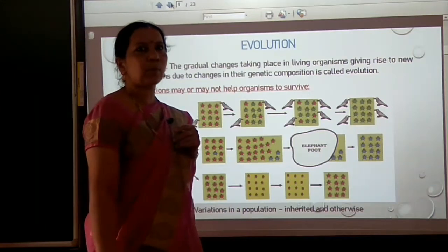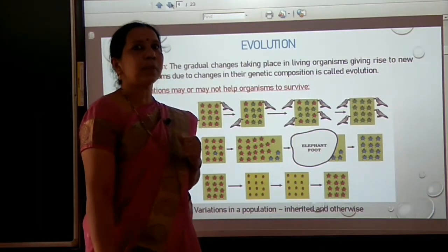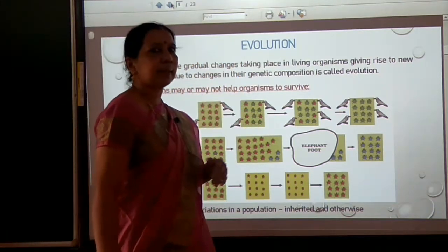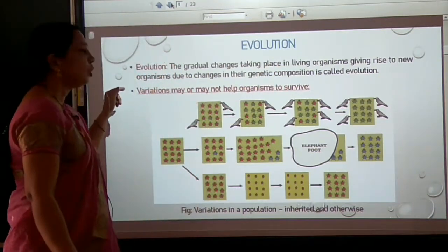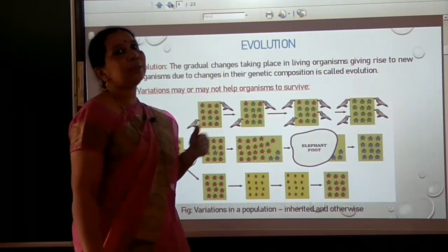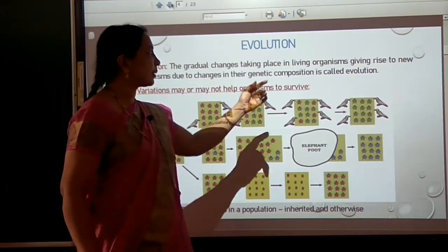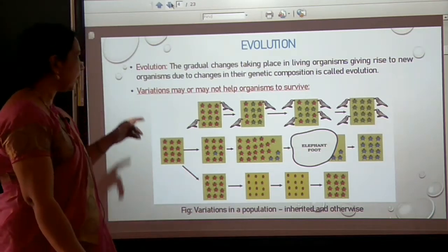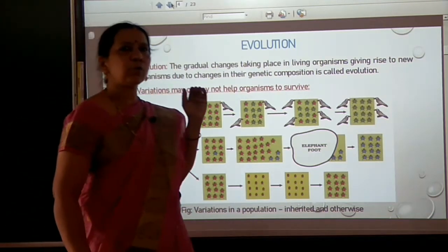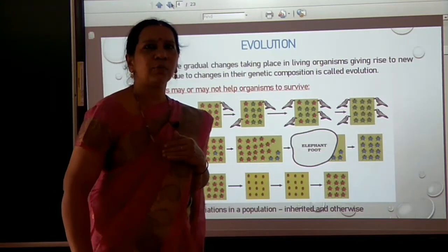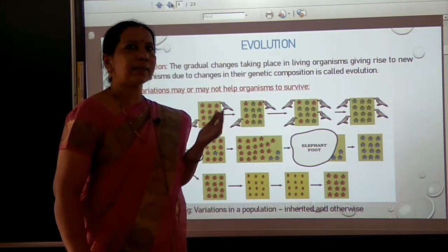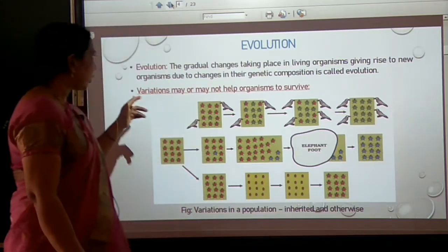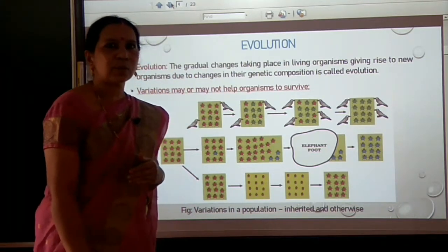We have also discussed about evolution. Evolution is nothing but the gradual changes taking place in living organisms, giving rise to new species or new organisms due to changes in their genetic composition. There are many reasons for evolution, which you will learn in later topics. One such factor responsible for evolution is variations. Sometimes variations help an organism to survive and direct evolution — some variations may or may not help organisms to survive.